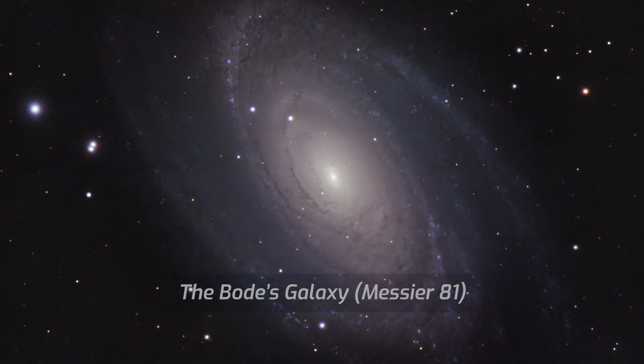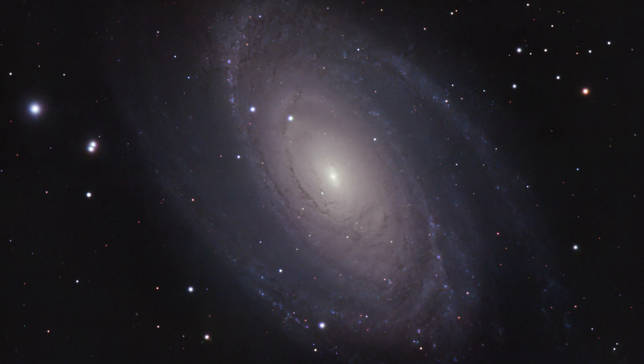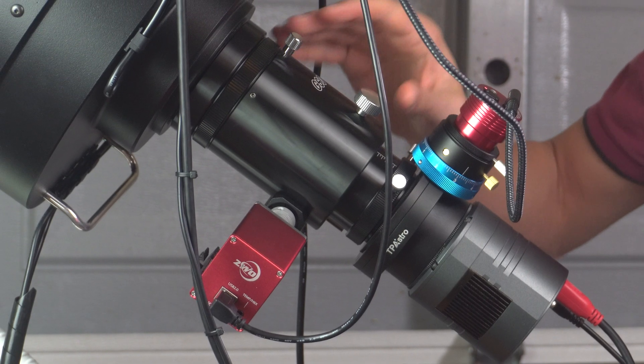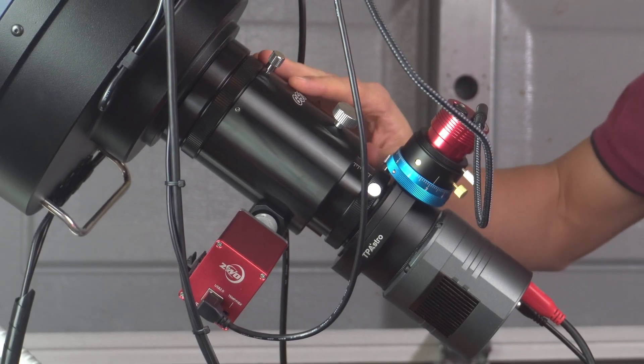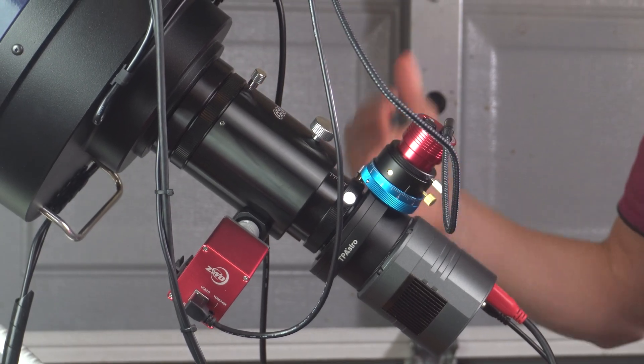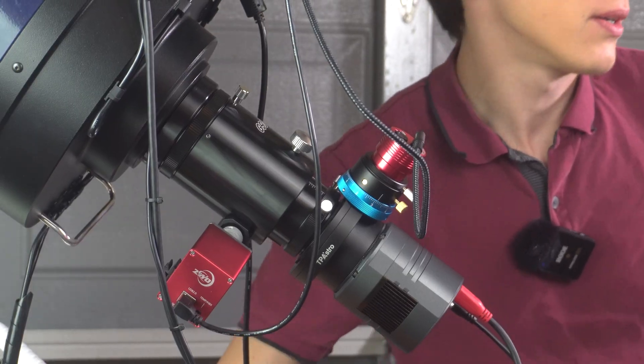My next image was the Messier 81 galaxy. As you can see here, the galaxy itself barely fits in the field of view of the telescope. I started thinking about a reducer and this part got tricky. You see, I use a Crayford style focuser on the telescope which doesn't allow me to use a standard Schmidt-Cassegrain corrector like this one.